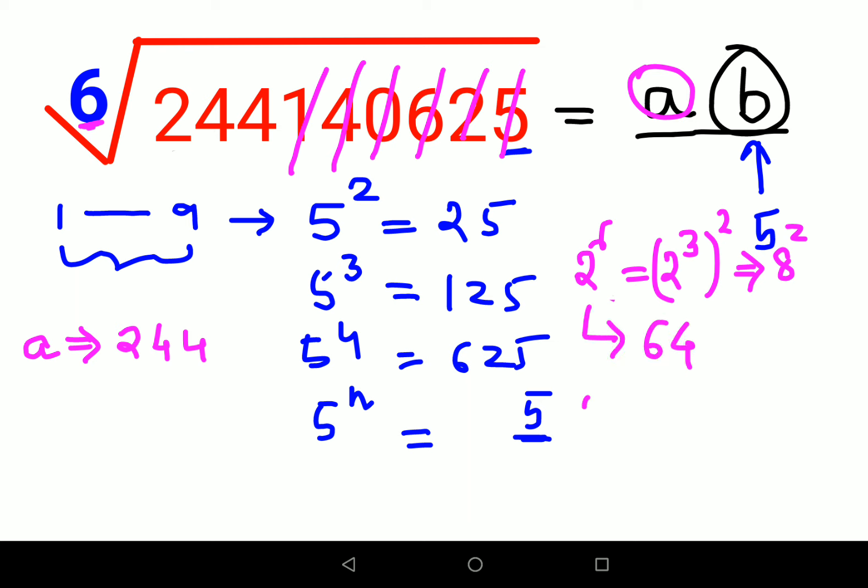Similarly let's try for 3 raised to 6. 3 raised to 6 can be written as 3 raised to 3 the whole raised to 2. 3 raised to 3 is 27, and 27 square, the answer for this one is 729.